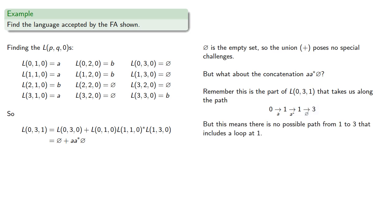But because that last part is the empty language, this means there's no possible path from 1 to 3 that includes a loop at 1. And so this language, a, a star, empty language, simplifies to just the empty language. And so we have a union of empty sets, which is just going to give us the empty set.